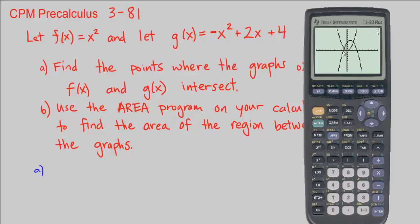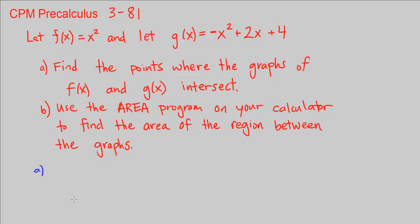Here's x squared, and here's g of x going downwards as a parabola. I can see that there are two intersection points — there's one here and one here. So how are we going to find those places algebraically?